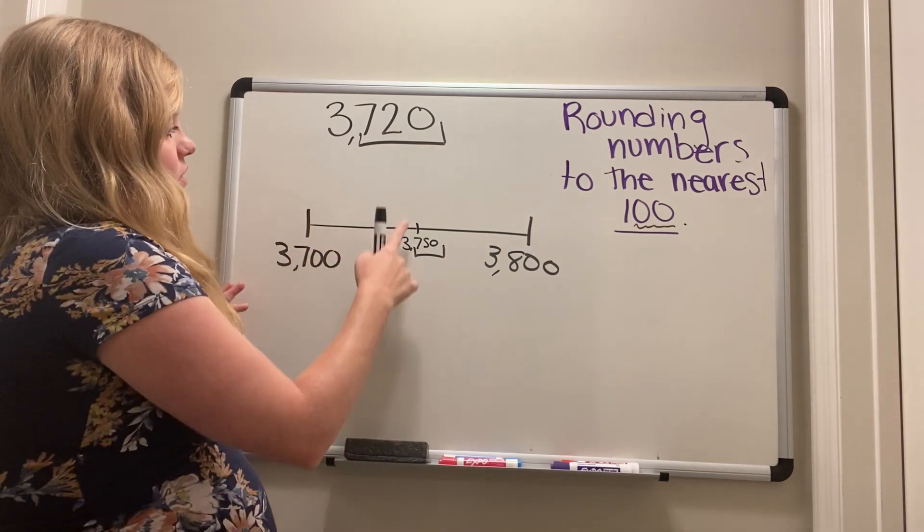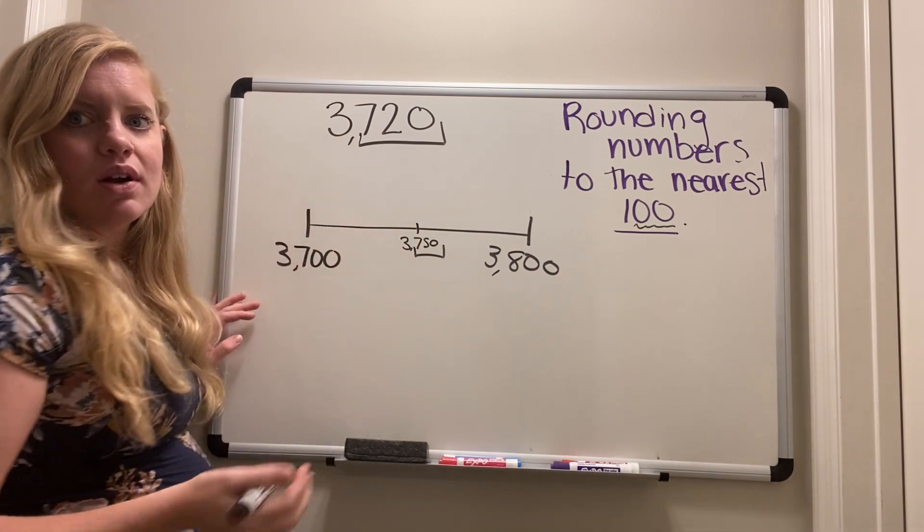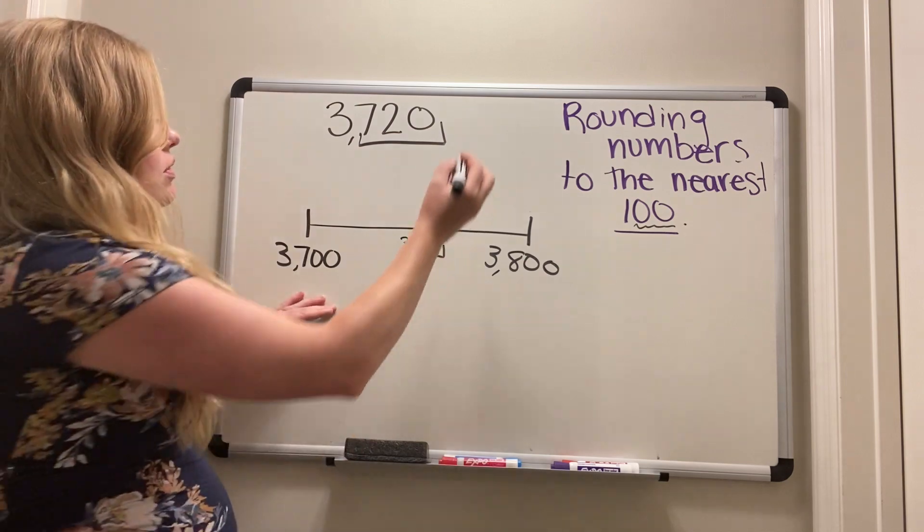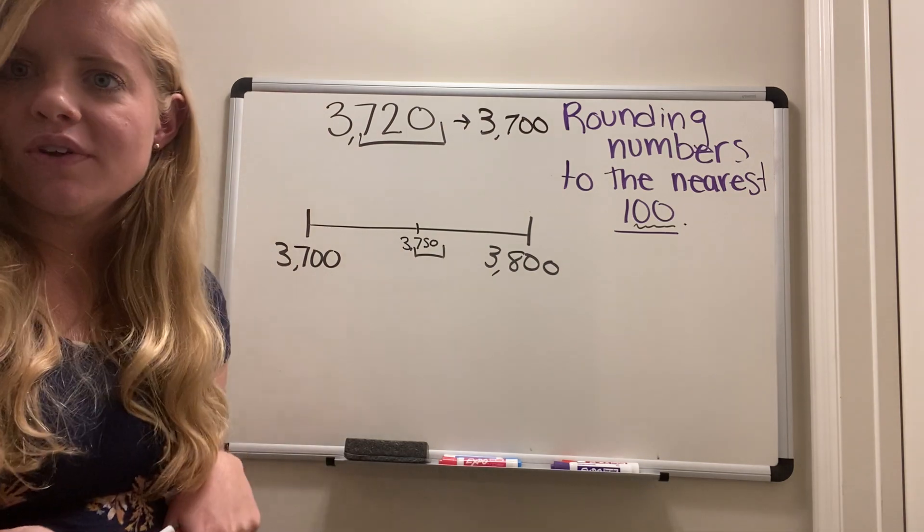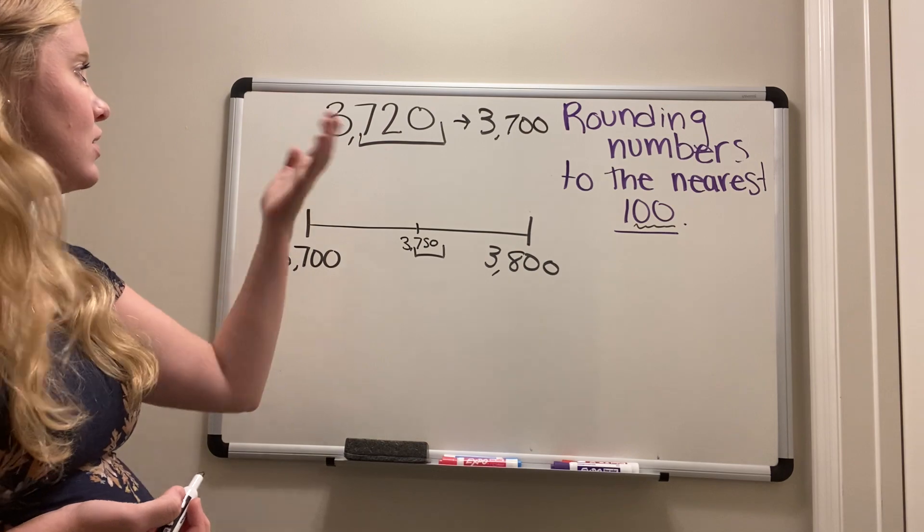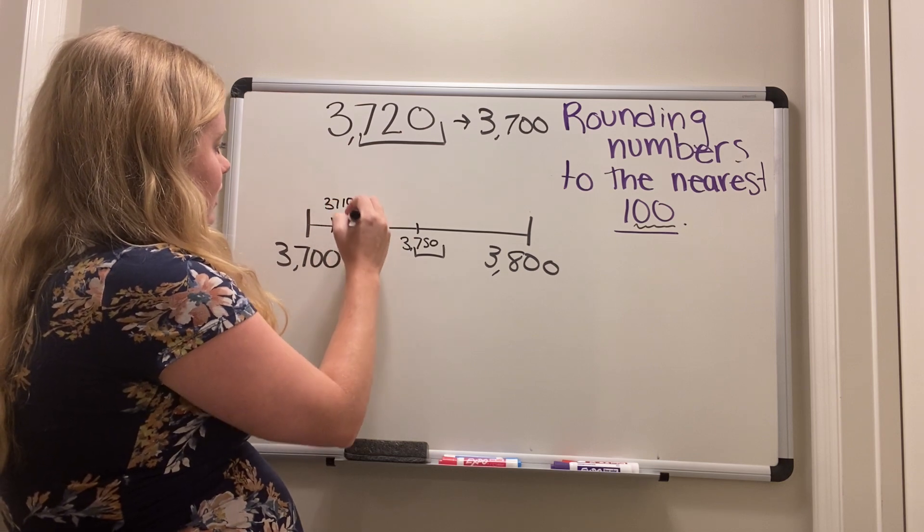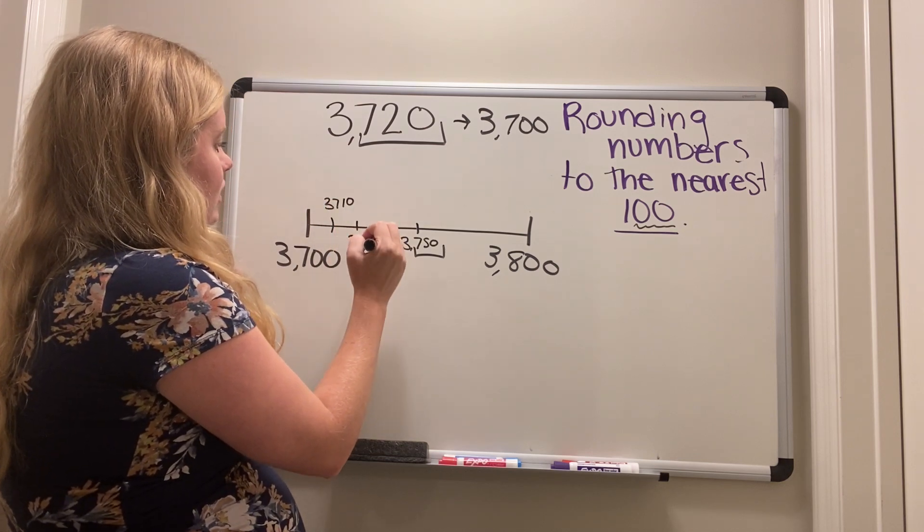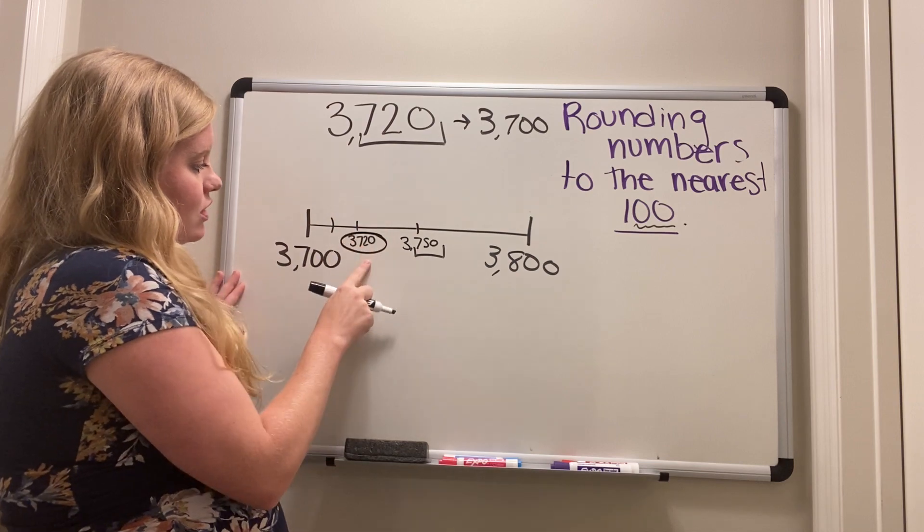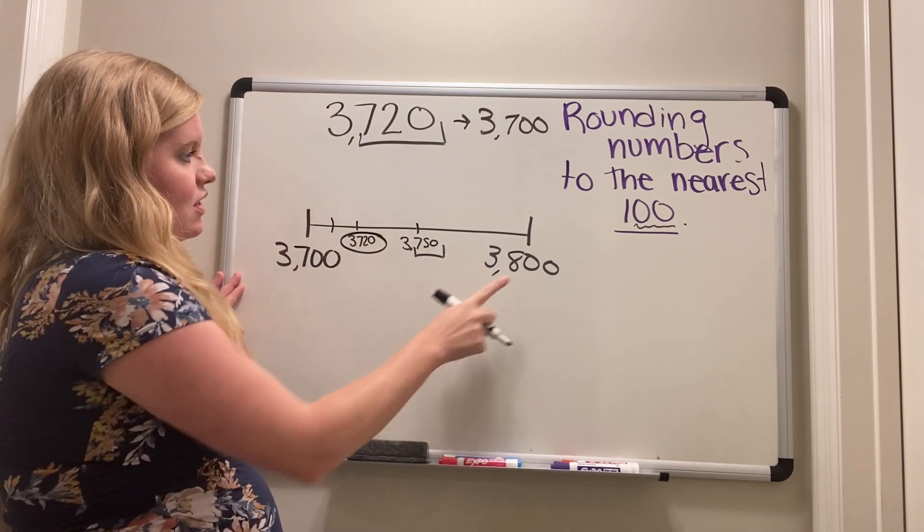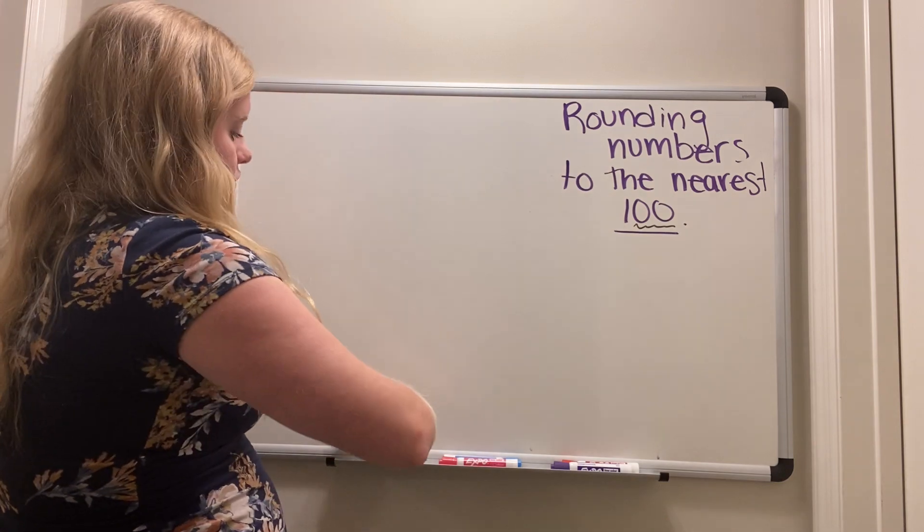Now, is 720 more than or less than 750? It's less than. Very good. So it's somewhere in here. So if it's on this side of the number line scholars, we already know what 100 we're rounding to, right? We already know that we're going to round this to 3,700. But just for giggles, we're going to figure out where this would be in the number line. So 3,700, 3,710, 3,720. There it is. So again, we can see that this number is closer to this hundred than that hundred.